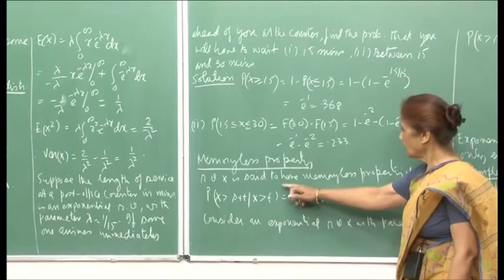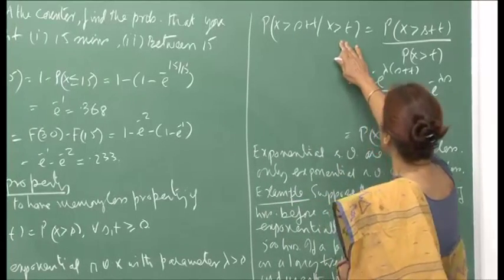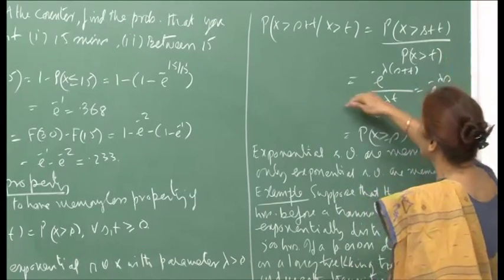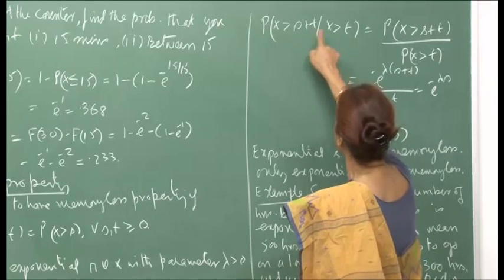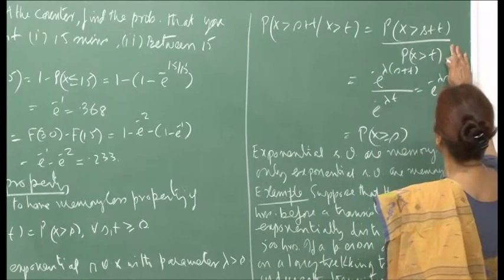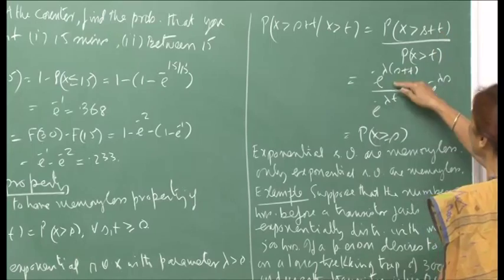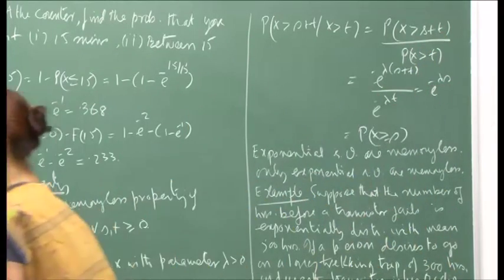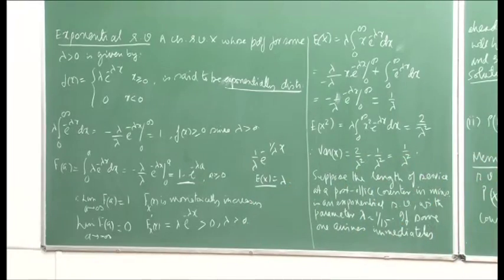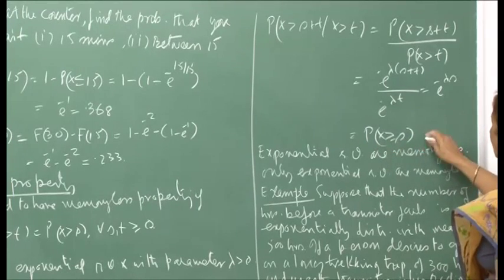For an exponentially distributed x with parameter lambda, probability x greater than s plus t given x greater than t equals probability x greater than s plus t divided by probability x greater than t. Since 1 minus F(a) equals e raised to minus lambda a, this becomes e raised to minus lambda(s+t) divided by e raised to minus lambda t, which equals e raised to minus lambda s, confirming x greater than s.